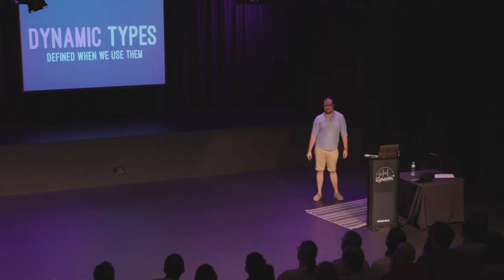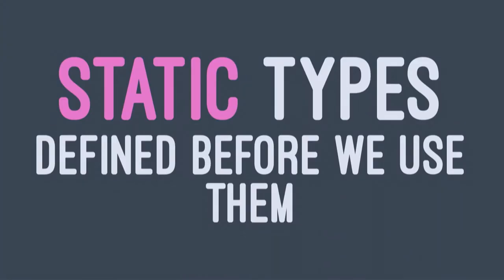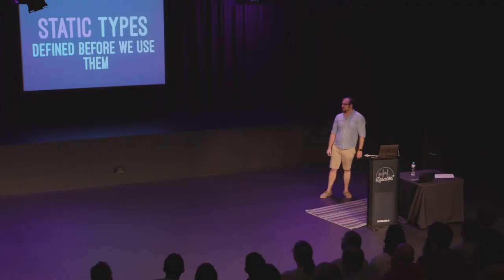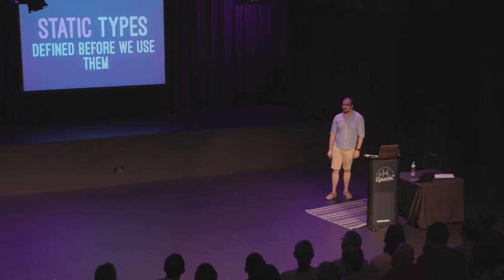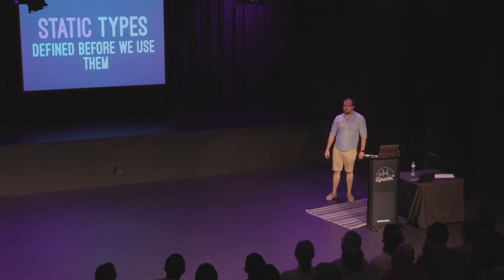PHP is a dynamic language — we have dynamic types. If we give a variable an integer, it becomes an integer. We've also got static types — they're defined before we use them. Before giving a variable a type, we have to declare it as an integer, and then we can only give it integers. If we give it something else, the programming language, compiler, or interpreter will complain, which can be good for catching bugs. Though it can be annoying for doing crazy dynamic things you see deep inside Laravel or Symfony.